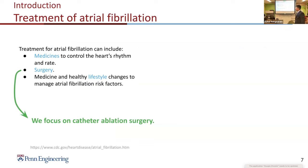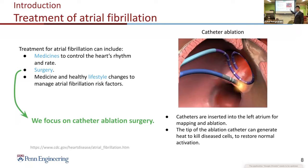Treatment for atrial fibrillation includes three kinds: medicines, surgeries, and lifestyle management. What we are focused on is catheter ablation surgery. This is an example of catheter ablation — catheters are inserted into the left atrium. The circular one is a mapping catheter with electrodes that can record endocardium electrograms, and the ablation catheter's tip can generate heat to kill diseased cells to restore normal activation.